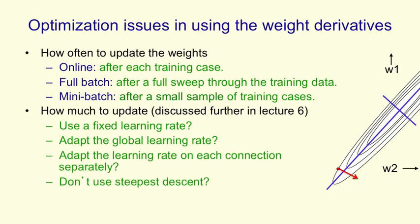Or we might go even further and say we don't really want to go in the direction of steepest descent at all. If you look at the figure on the right, when we had a very elongated ellipse, the direction of steepest descent is almost at right angles to the direction to the minimum that we want to find. And this is typical, particularly towards the end of learning, of most learning problems. So there's much better directions to go in than the direction of steepest descent. The problem is, it's quite hard to figure out what they are.